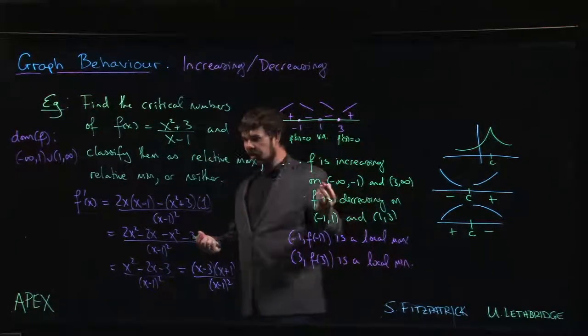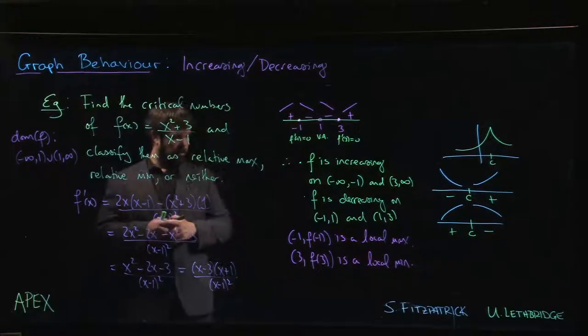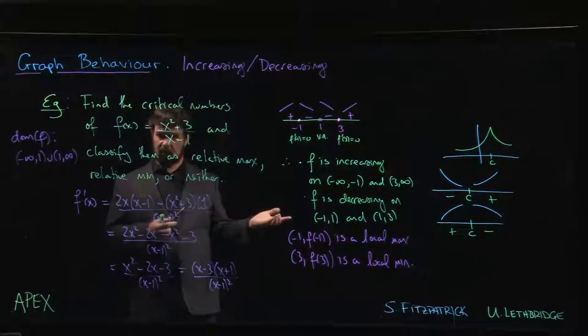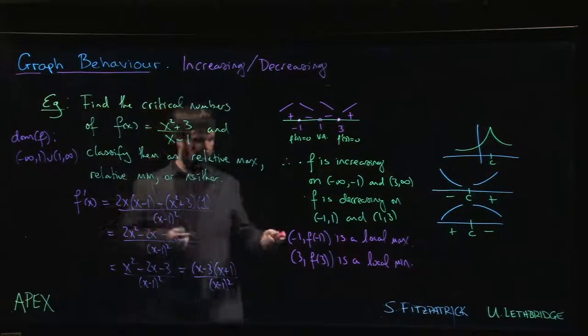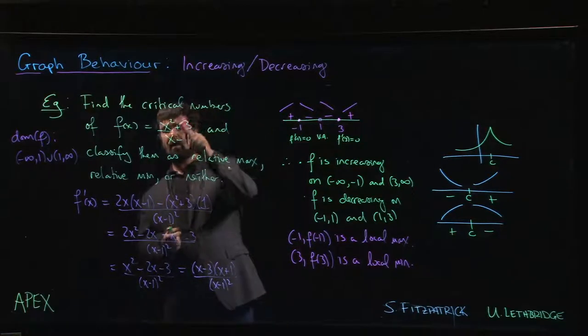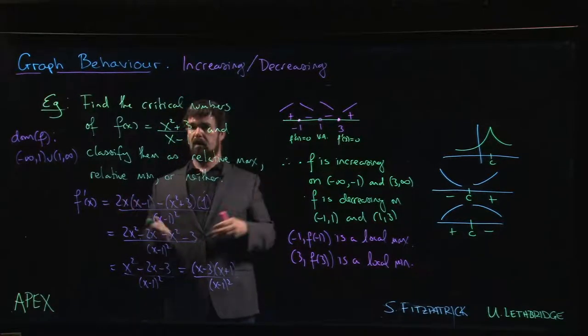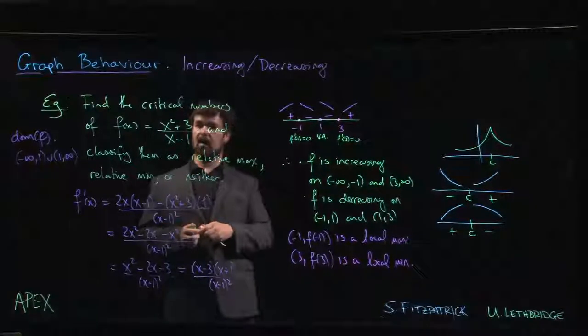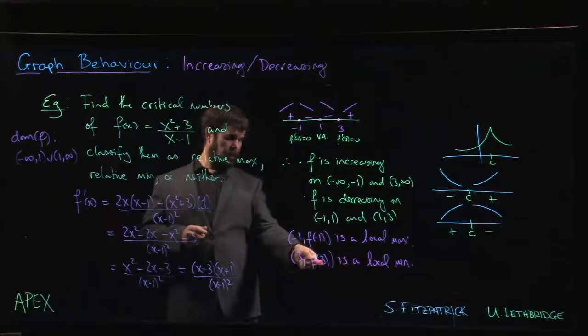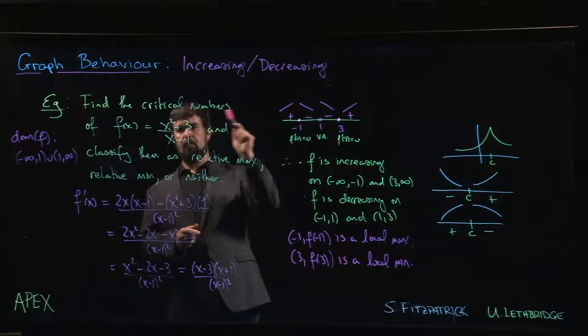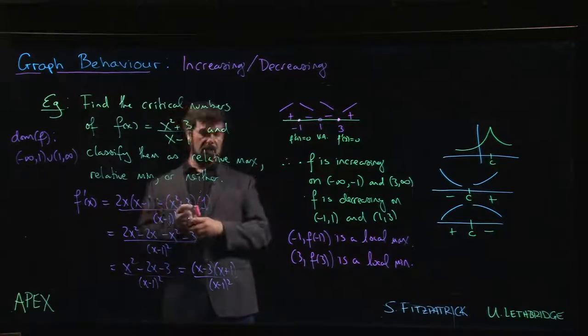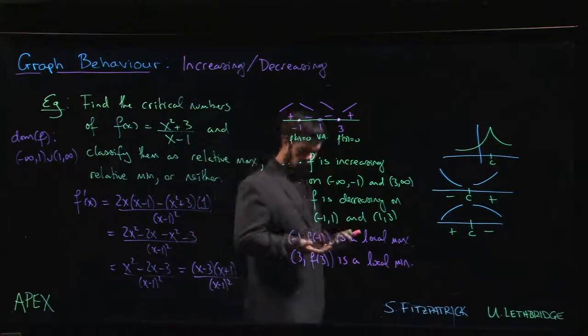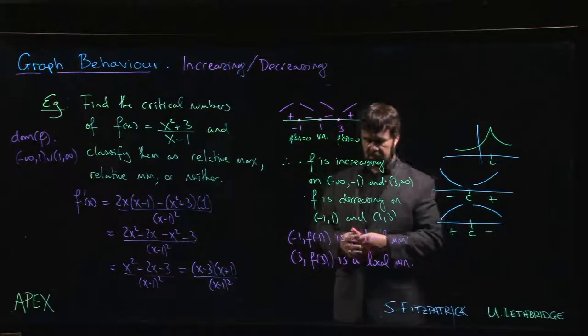Okay, and question didn't ask for them, so maybe we'll be lazy. We won't compute those y values. If you really wanted to, we can take that minus 1, plug it back in up here. We get negative 3 over 2 at that local max. Take the 3, plug it in, get that. So you can work out the y values for the local max and the local min.